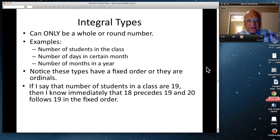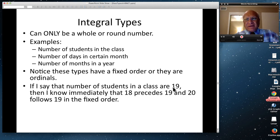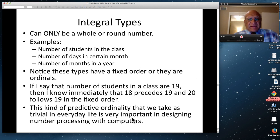They have fixed order. So what does that mean? That if I say number of students in a class are 19, then I immediately know that 18 precedes 19 and 20 follows 19. And this order is fixed. You can't change it. That's the meaning of the word ordinals. And this kind of predictive ordinality that we take, think that is trivial. It doesn't really matter in everyday life. We think that 18 preceding 19 and 20 following 19 is trivial. It has no real value or meaning.